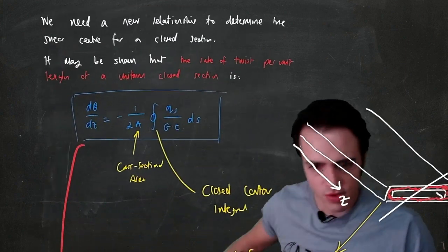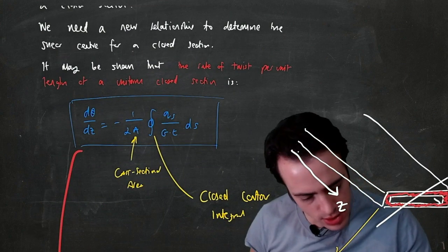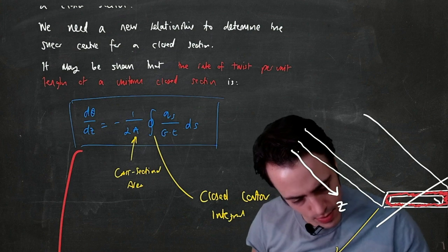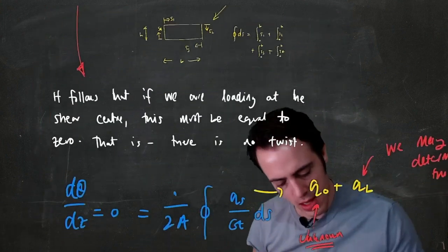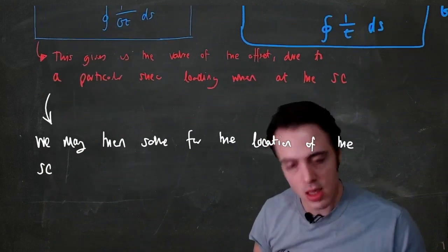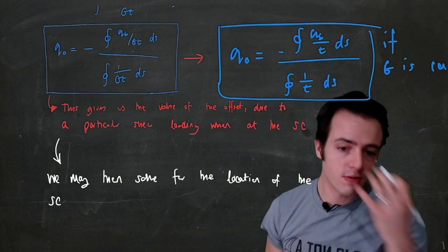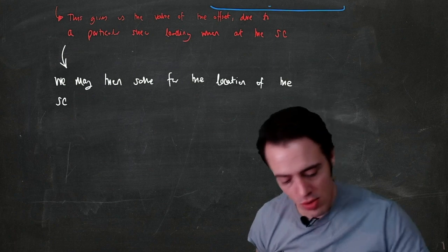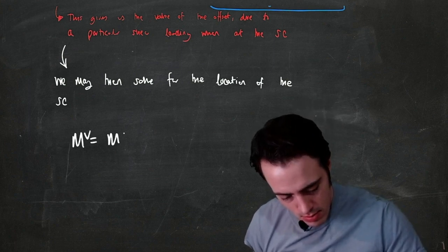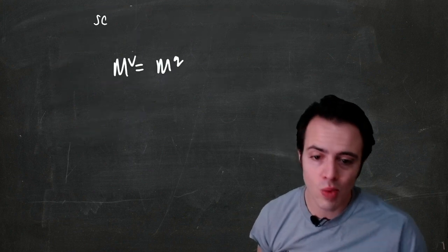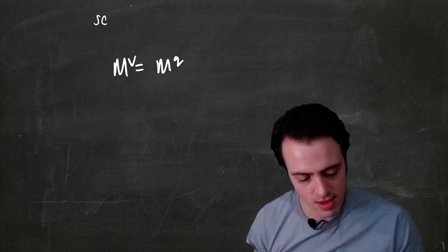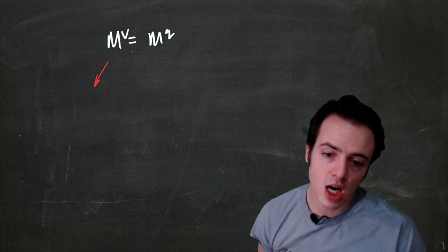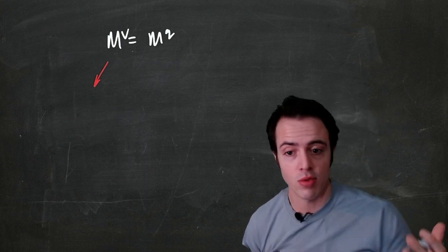There was a mistake — there should not be a negative sign in this expression. Everything else that follows is fine. Using these equations, we determine the value the offset must have when loading at the shear center, and once we have that we use the moment equivalence equation to determine where the loading must be occurring — that gives us the shear center.